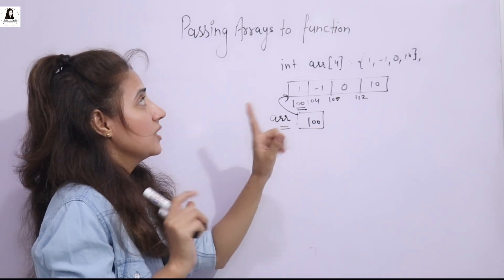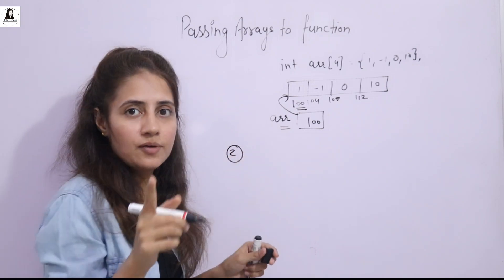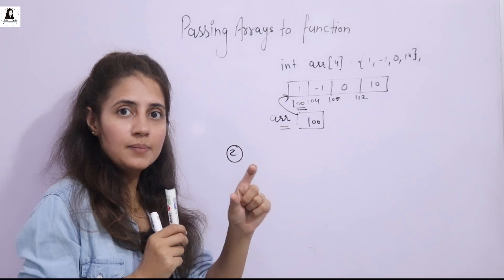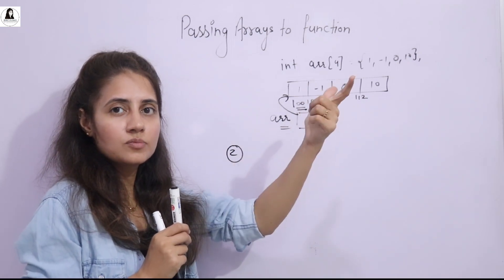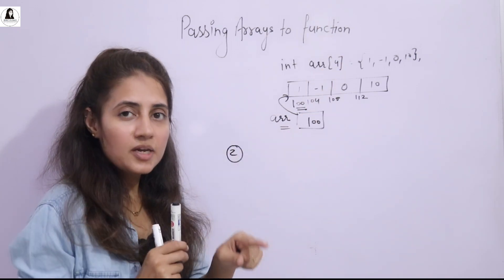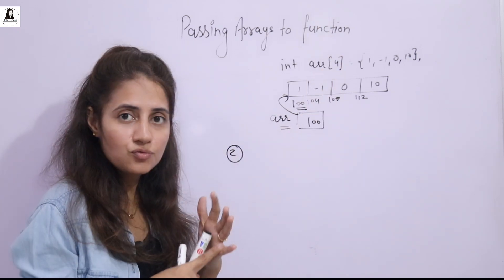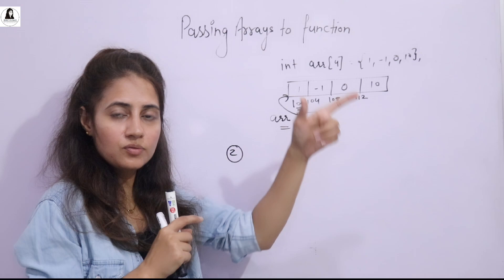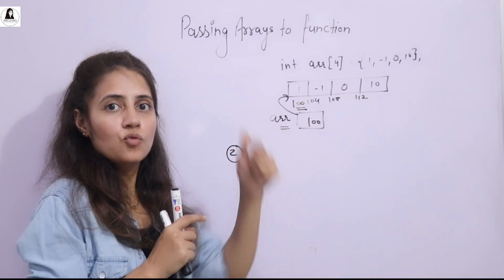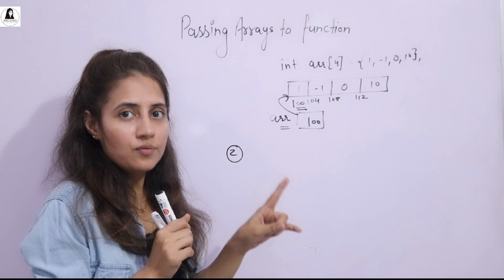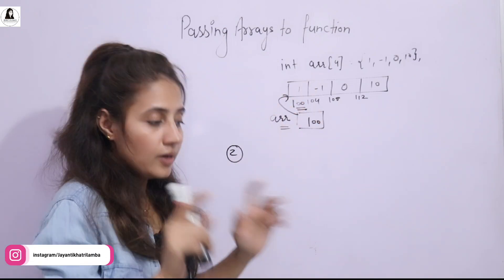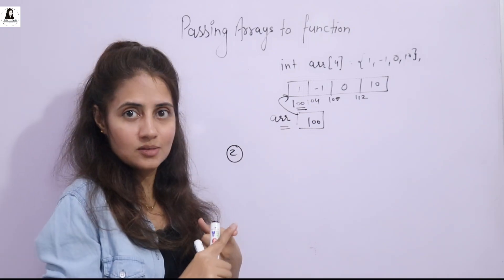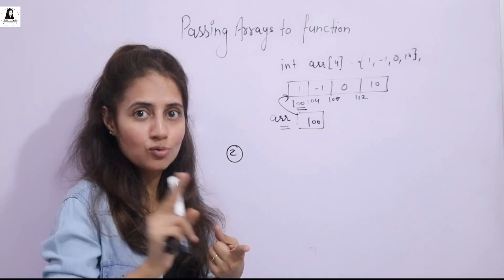The second thing you need to remember: we discussed call by value and call by reference. In call by value, a copy of the arguments is passed to the function. In pass by reference — achieved with reference variables or pointers — the actual elements are passed, not a copy. While passing arrays to a function, arrays are passed by reference by default, not by value.